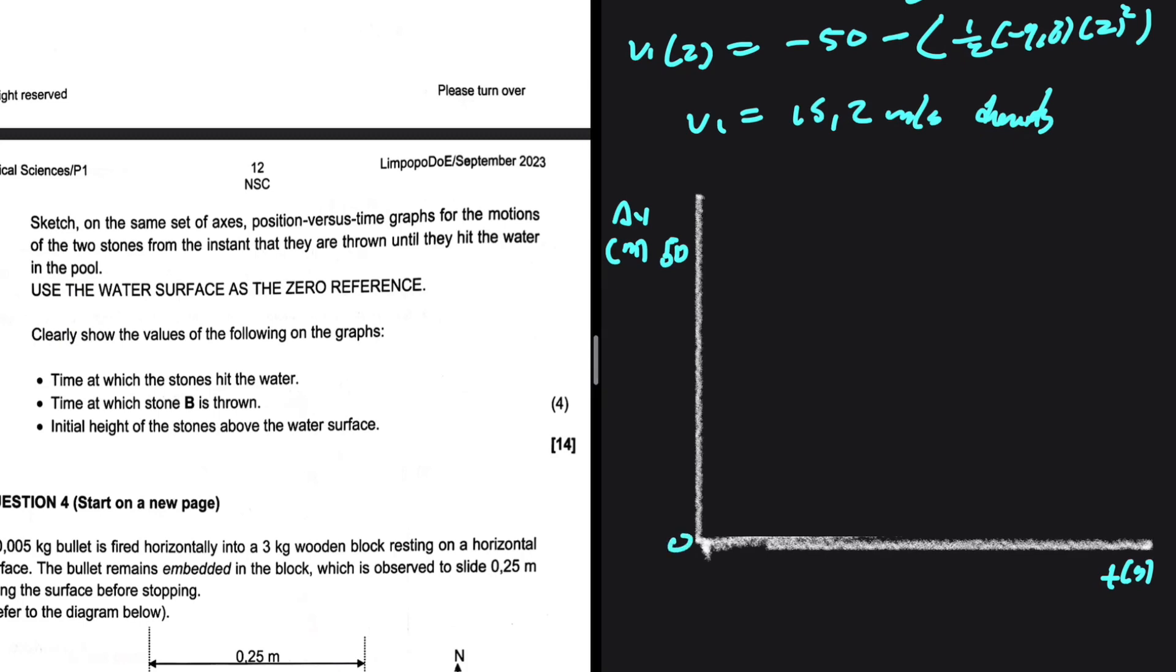What is our time? They strike the ground at 3 seconds, but stone B is projected one second after stone A was projected. So the position-time graph for stone A would look something like this. And then on the other hand, stone B will look something like this. There we go. This is stone A and this is stone B.